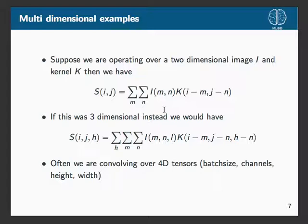Now let's look at a multi-dimensional example. Suppose we have a two-dimensional image. We can think of any image as a function taking two points — n and n — representing height and width at a given point, giving us an output. We also have a kernel function telling us how to weight this. We can perform the convolution this way and extend it to an arbitrary number of dimensions.